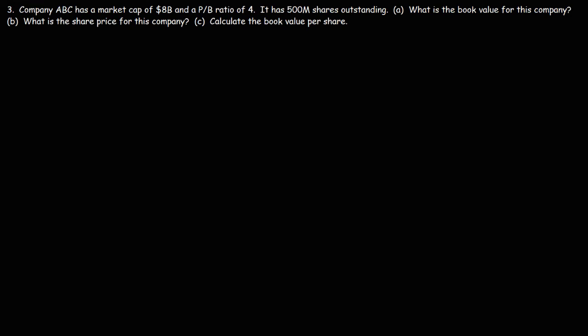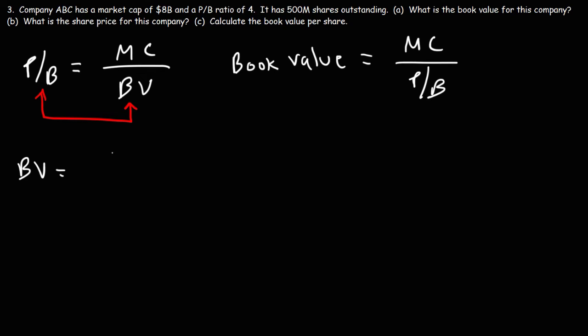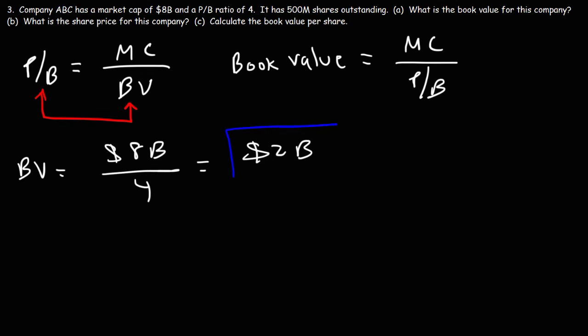Now let's move on to number three. Company ABC has a market cap of $8 billion and a PB ratio of 4. It has 500 million shares outstanding. What is the book value for this company? Earlier we said the PB ratio equals market cap divided by book value. Rearranging, the book value equals the market cap divided by the PB ratio. The market cap is $8 billion and the PB ratio is 4, so the book value is $2 billion.